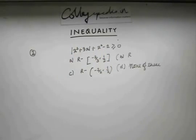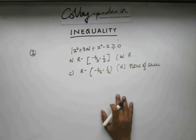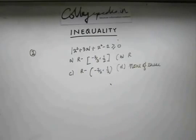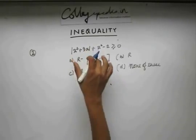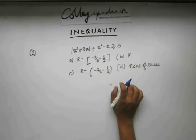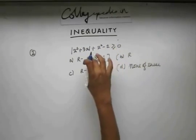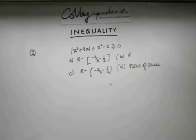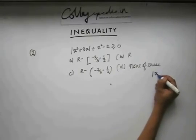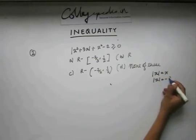Here you have a mod sign. First, you need to get rid of the modulus, because if you don't, you don't know the value of x. Squaring would make it more complicated — if you bring x² − 2 to the other side and square, you get a degree-4 polynomial. The better approach is to use the basic definition: mod x = x if x is positive, and mod x = −x if x is negative.